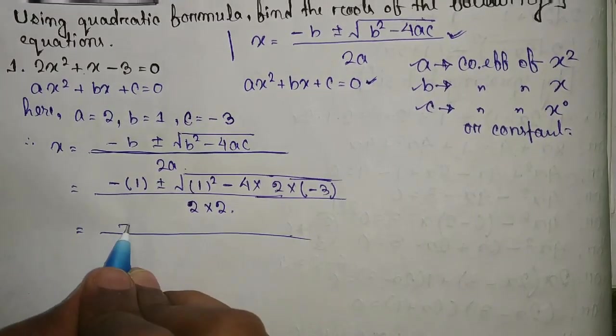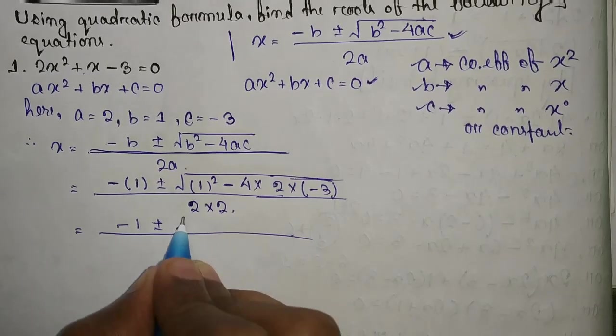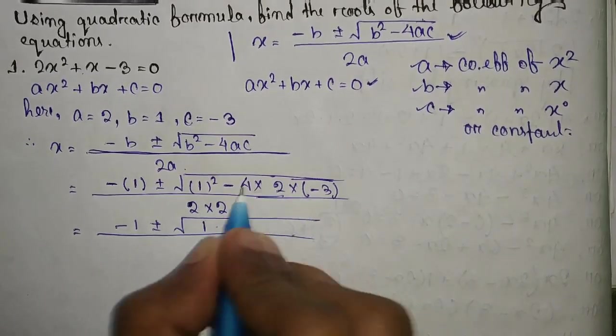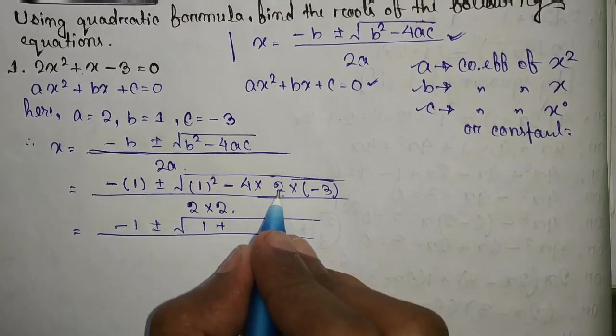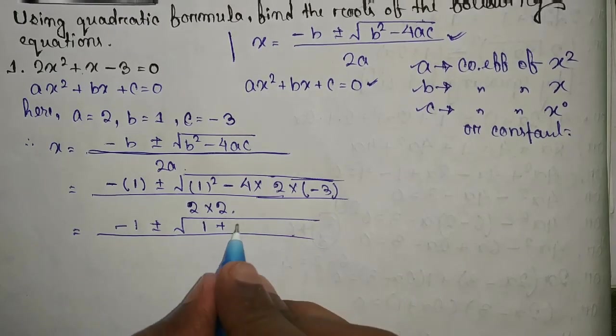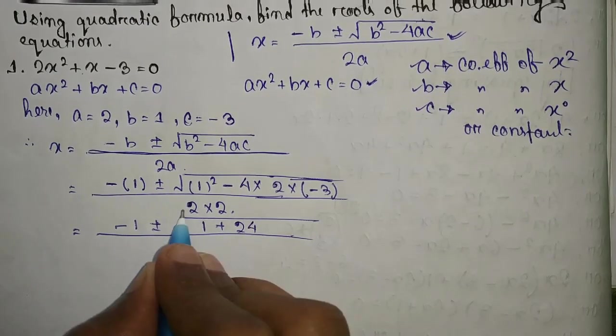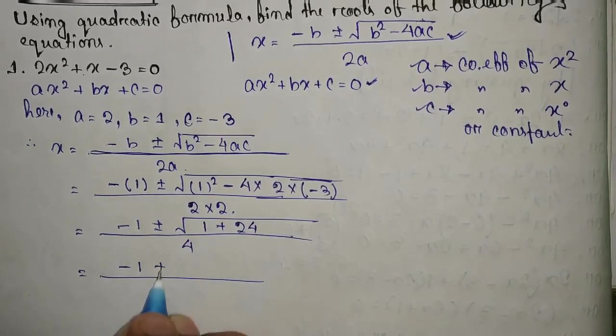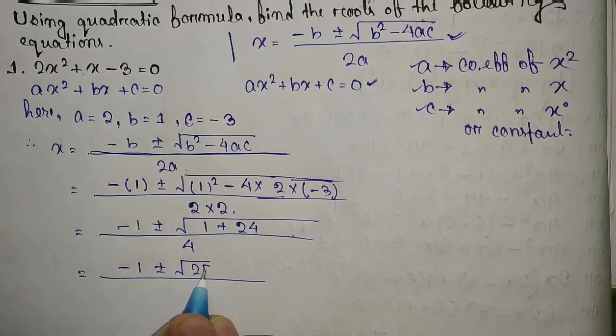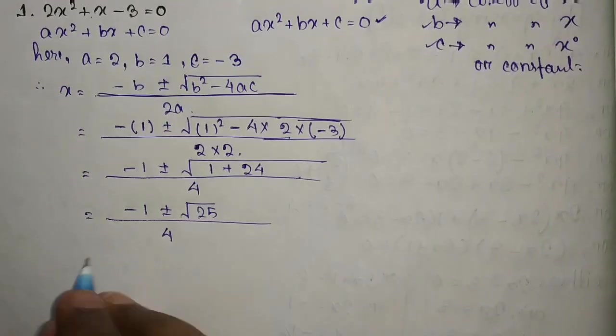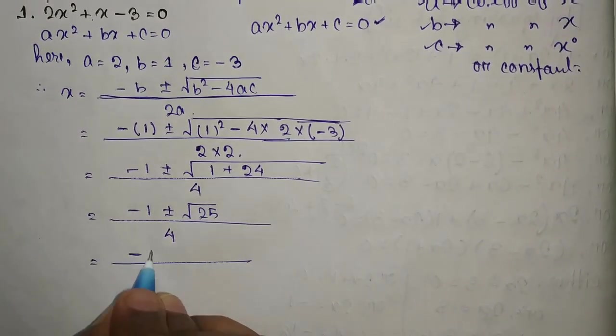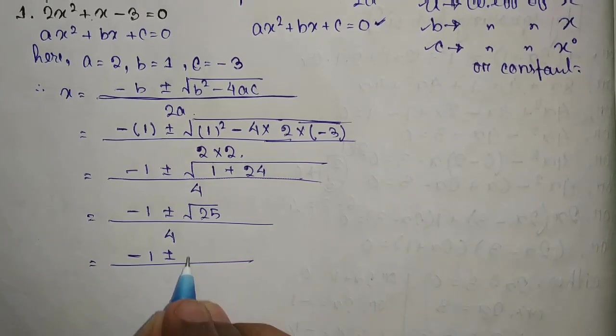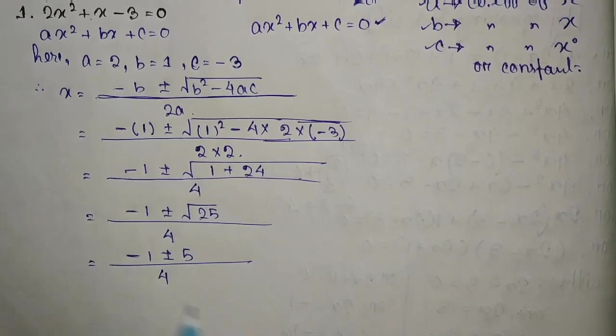This is minus 1 plus minus root over 1 plus 24 by 4 equal to minus 1 plus minus root over 25 by 4. Root 25 is 5 by 4.